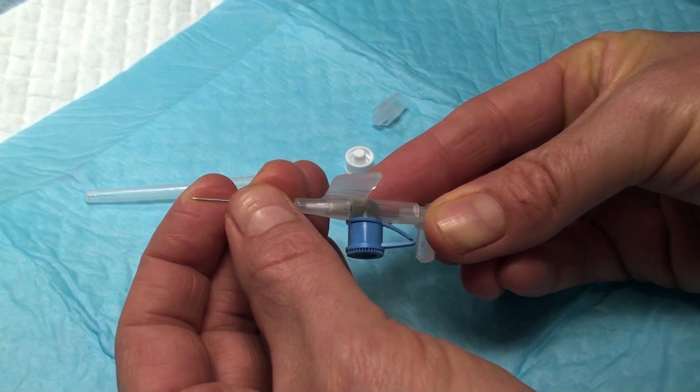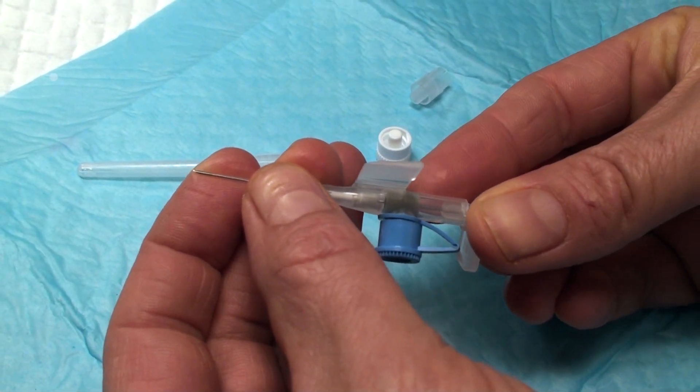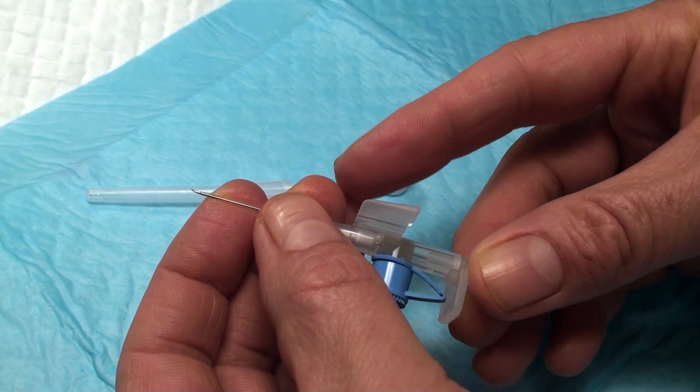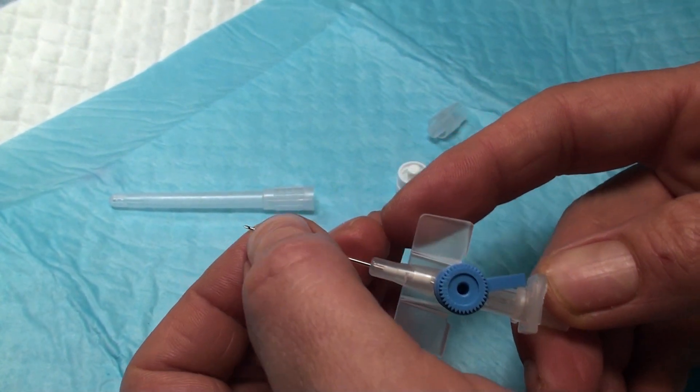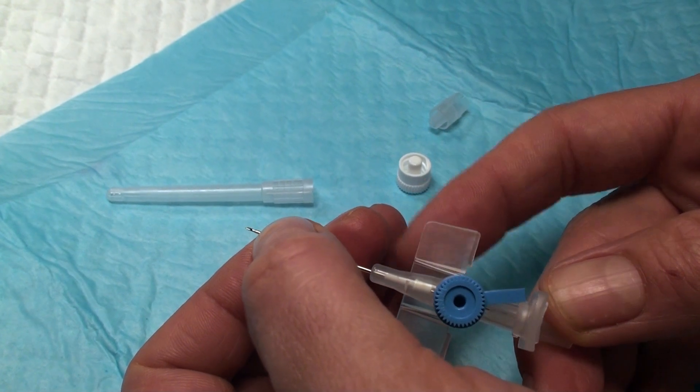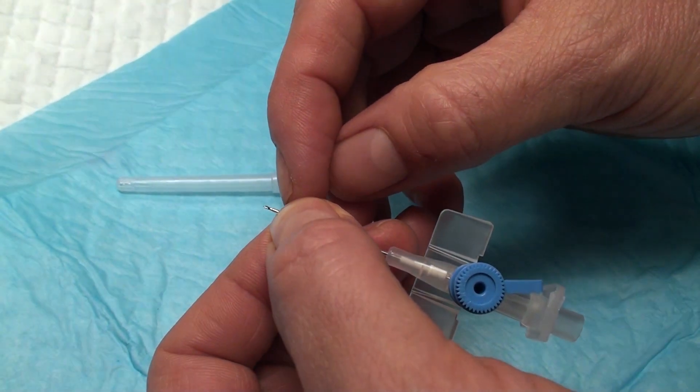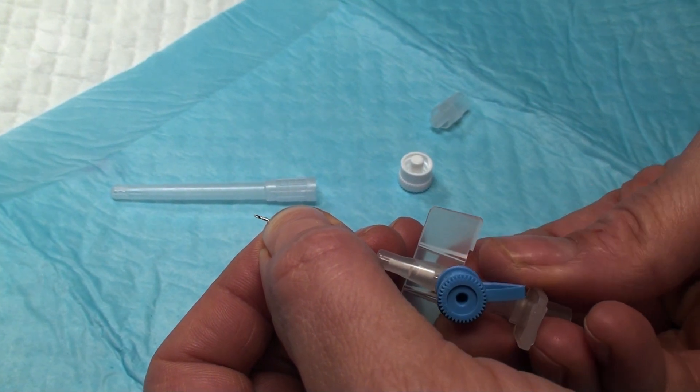This means that when you introduce the catheter into the vein, you will puncture the vein with the needle. You will have to be sure that you puncture the skin and the vein for a couple of millimeters before you take the needle back.